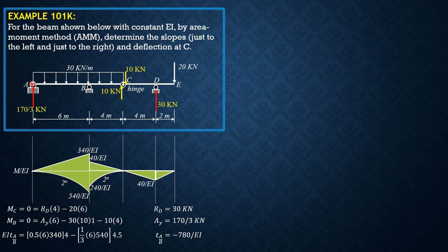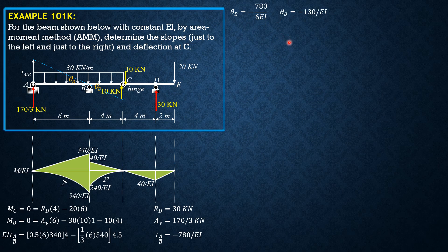Negative means A is below the reference tangent at B, so B is above A. Since the deviation is negative, θ_B is also negative — it slopes down to the right. θ_B equals negative of (deviation of A relative to B) divided by 6, which is negative of 780 divided by 6EI. So θ_B equals negative 130/EI.